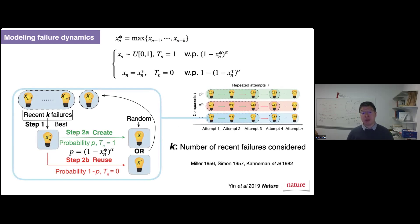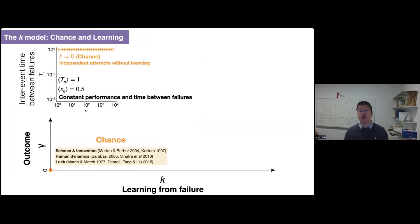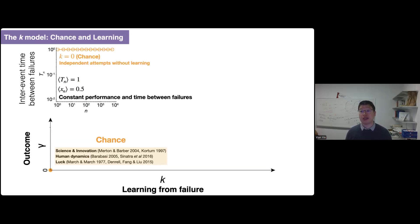Updating a component is costly in time and provides more variance in performance, while reusing an existing component saves time and keeps the original score. This model mimics the exploration-exploitation framework. The key parameter here is k — defined as the number of recent failures considered every time — which tells us how much you learn from your past failures. At one extreme, k equals zero: no previous failure is taken into consideration, you don't learn from your past, performance stays constant on average, and success happens purely driven by chance, relating to the literature highlighting the role of luck in science and innovation.